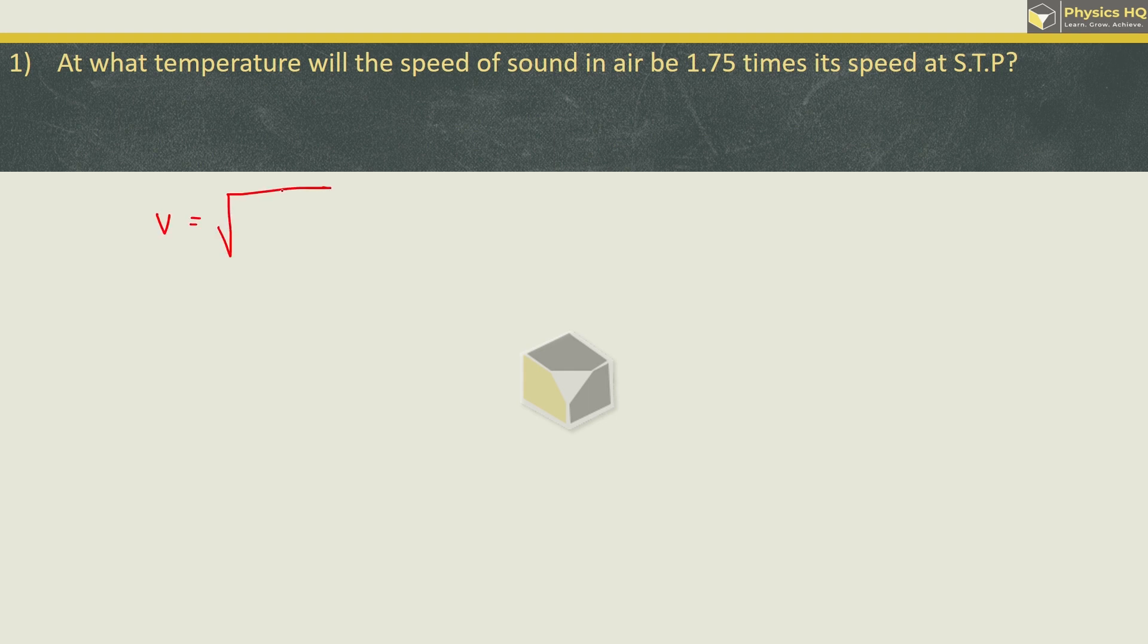Velocity ka formula hota gamma nRT by M. Now out of all this, we are only supposed to talk about temperature. So we can say that velocity is directly proportional to temperature. And we are supposed to find that temperature where speed of sound in air will be 1.75 times of the speed at standard temperature and pressure. Now, standard temperature and pressure is taken at 0 degree Celsius. You can write it as 273 Kelvin. So we need to find this new temperature where the velocity is 1.5 times the velocity at standard temperature and pressure.